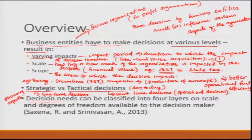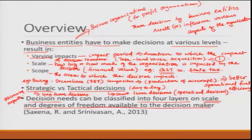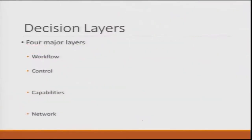After this, we will talk about the needs of decisions. We can classify decision needs into four layers or categories based on the scale of decisions and the degrees of freedom available to the decision maker. This four-layer framework has been proposed by Saxena and Srinivasan in 2013, and this concept is quite important to analytics. There are four major layers of decision making.